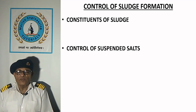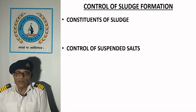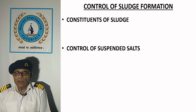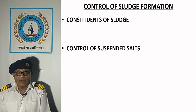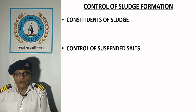Control of suspended salts: salts such as sodium chloride, magnesium chloride and magnesium sulphate are highly soluble in water, but their concentration in boiler water should be kept within limits by partial blowdown at regular intervals to prevent carryover or sludge formation. Sodium carbonate and sodium sulphate formed in the chemical reactions contribute to alkalinity in boiler water.